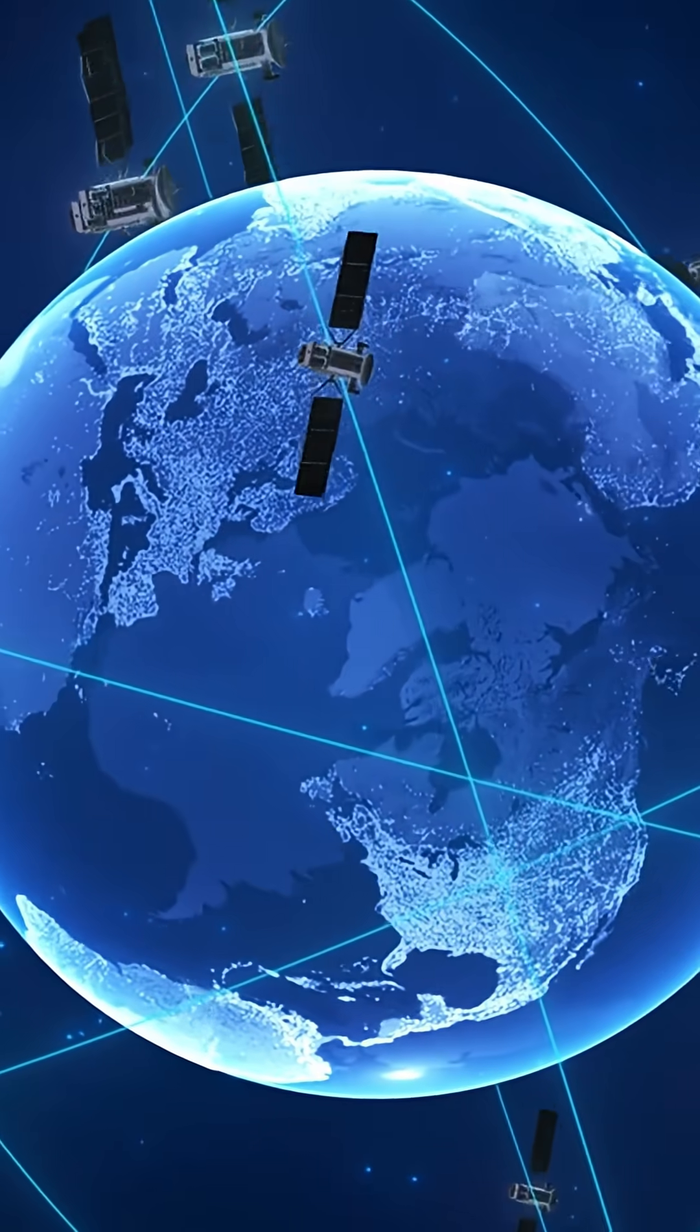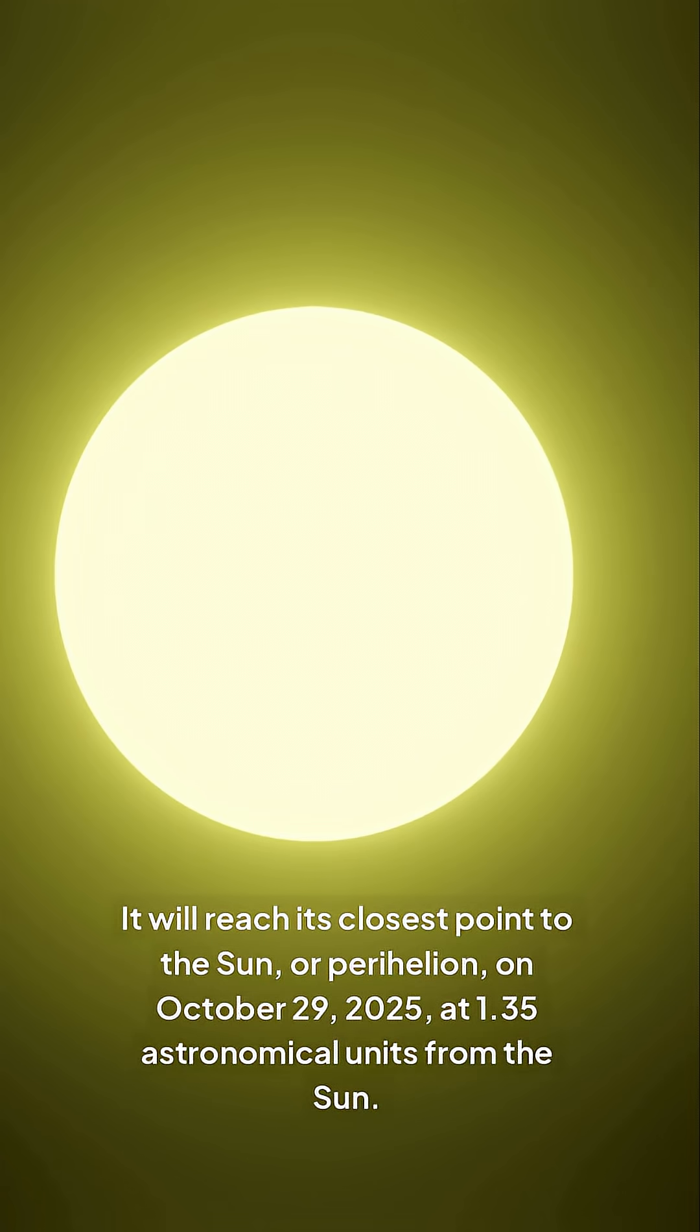What sets A11PL3Z apart is its inbound trajectory. It will reach its closest point to the Sun, or perihelion, on October 29, 2025, at 135 astronomical units from the Sun.